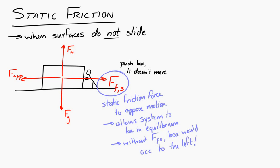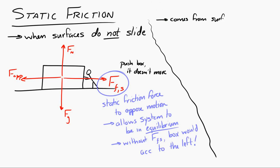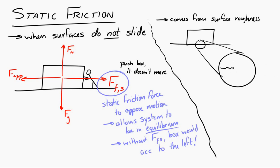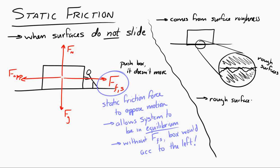Physically, friction comes from the roughness of surfaces. If you look microscopically at two surfaces in contact, you see them grab onto and interfere with each other as they attempt to slide. Rougher surfaces can provide more static friction, while smoother surfaces can provide less.